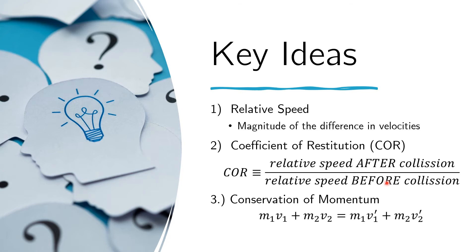More precisely, if we have two objects of mass M1 and M2 moving at velocities V1 and V2, the sum of their momenta before the collision equals the sum of their momenta after the collision. Momentum is defined as the product of an object's mass and its velocity. So the first term on the left is M1 times V1, the momentum of the first object, and the second term is M2 times V2, the momentum of the second object.